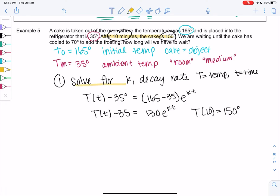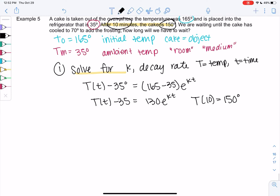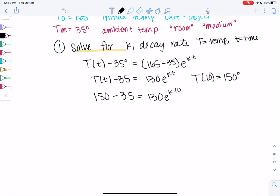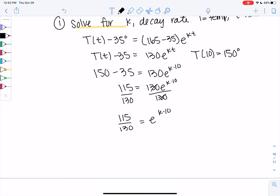So 150 minus 35 equals 130E to the K times 10. So let's solve for k. 150 minus 35 is 115. We'll divide both sides by 130 because we need to get the e all alone. I'm just going to go ahead and leave the fraction so I don't have to worry about rounding. So 115 equals 130 times e to the k times 10. Now we can take the ln of both sides because the e is alone.